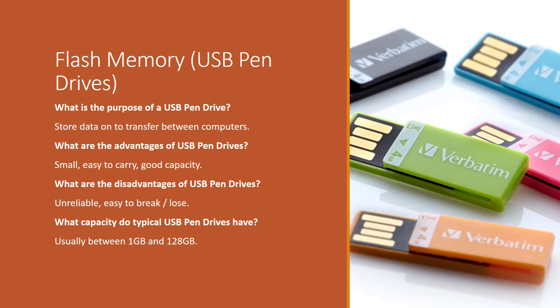Our last device is the USB pen drive. These are used to store data and to swap data between two or more computers. They have the benefit of being small and highly portable with a good storage capacity. They do not have the fastest read-write speeds, but they are sufficient. The problem with many USB pen drives is that they can break easily and can be unreliable, and they are also easy to lose. Typical capacity is anywhere between 1GB and 128GB.